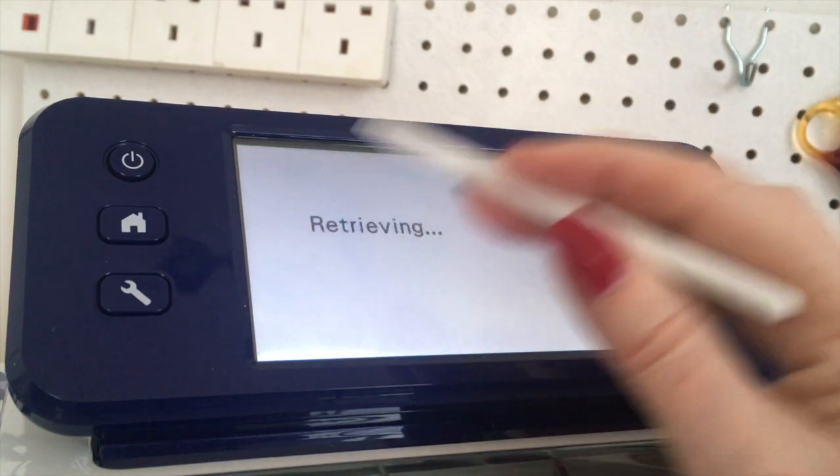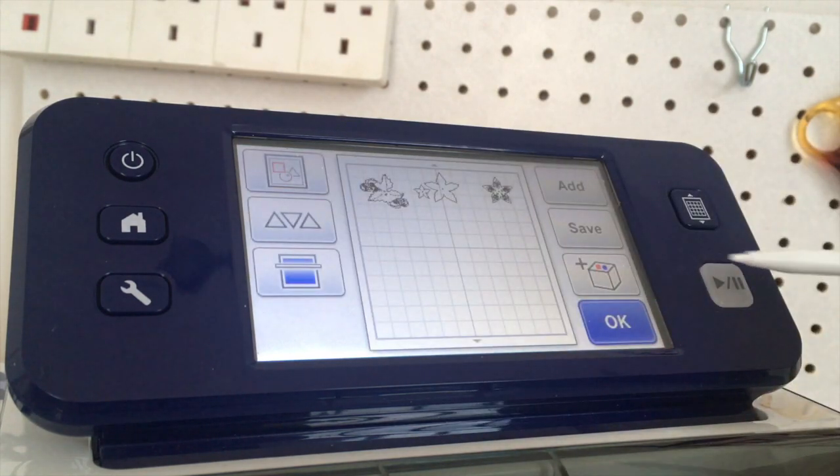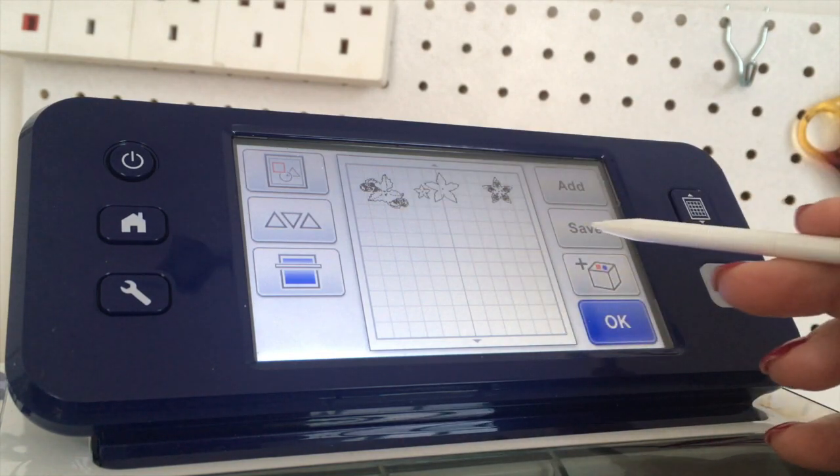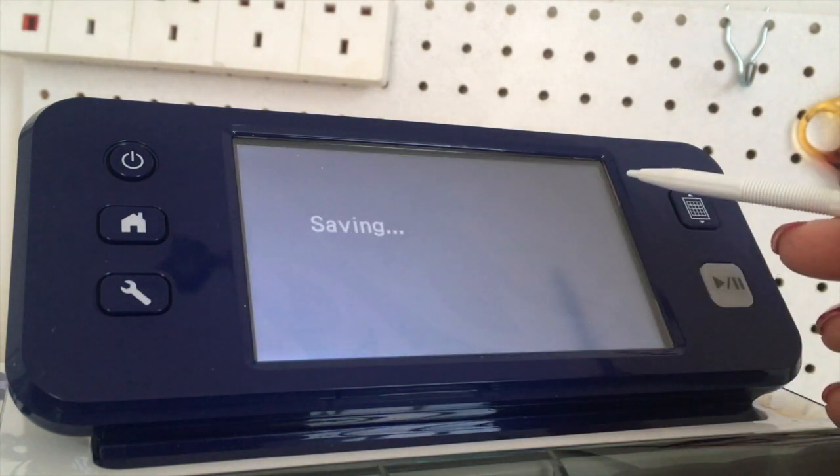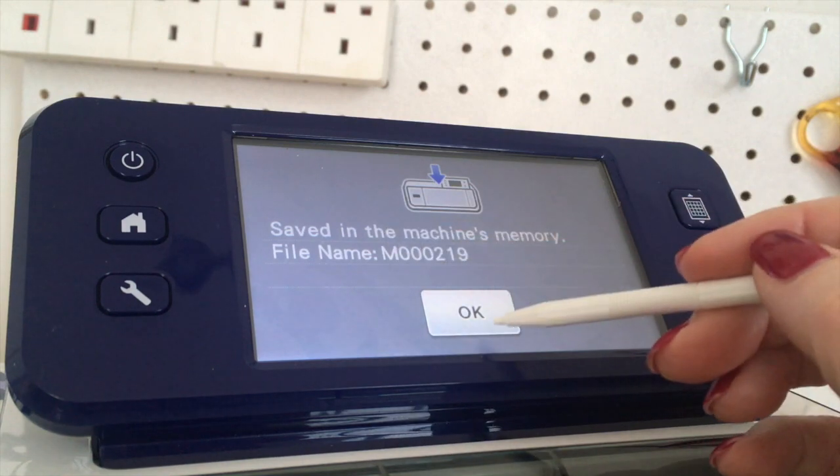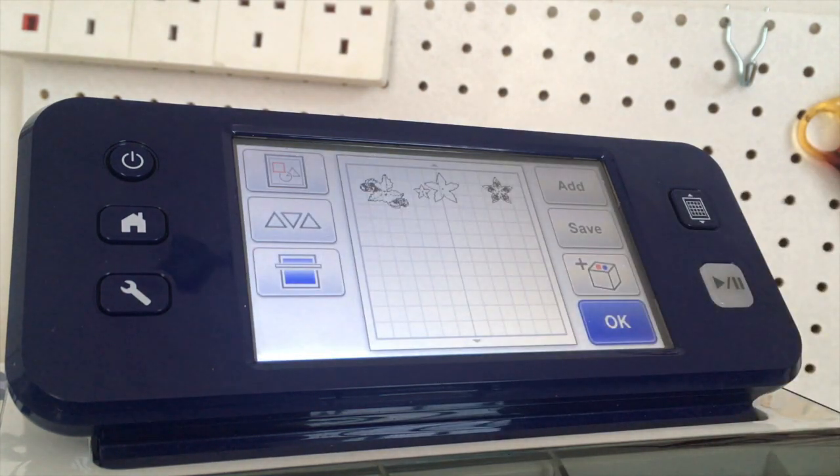I'm just going to go back to wi-fi transfer, wait for the file to come over, and there's the file. Then I would save it, so I'd hit save, put it in the machine. It's going to tell me it's saved and it's pattern 219, so I'm going to say okay.